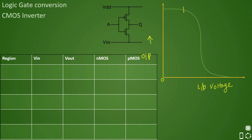Region A: the input voltage is very small — essentially 0 — and lesser than the threshold voltage. In this region, the PMOS transistor turns on and enters the linear region, while the NMOS is off. Since PMOS is on, VDD flows to the output, so the output is high. The output at this point is VOH — output high voltage.